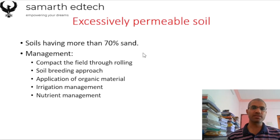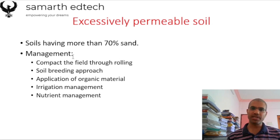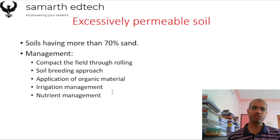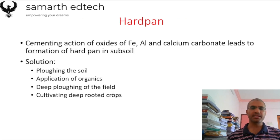Excessively permeable soil is one where the permeability rate or sand content is more than seventy percent. Management includes compacting the field through rolling, applying soil binding, adding organic material, and proper irrigation and nutrient management in order to reduce the problem.